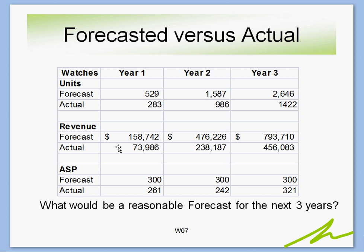If we get into the market and decide to go after the business — maybe it's a small side business, a product with good long-term potential, or a new revenue stream — by year 3 it's about $800,000 in revenue, which is starting to look attractive for a small business. Once you have forecasted values (year 1: 529, year 2: 1,587, year 3: 2,646), the next step is to look at your actuals and then determine what a reasonable forecast would be for the next three years.